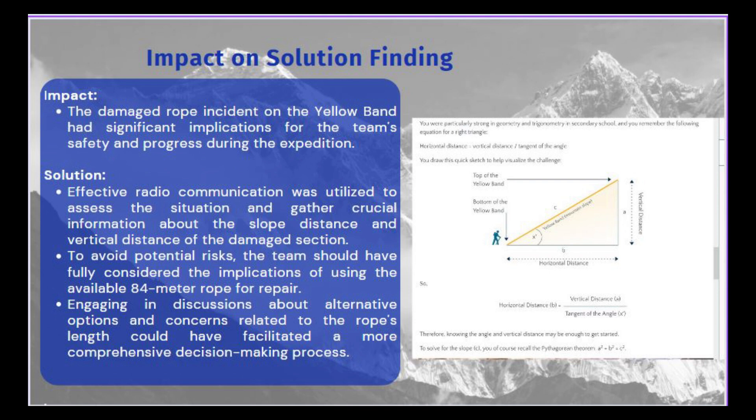The solution involved three principal approaches. Number one: effective radio communication was utilized to assess the situation and gather crucial information about the slope and vertical distance of the damaged section. Number two: the team should have fully considered the implications of using the available 84-meter rope for the repair. Number three: engaging in discussion about alternative options and concerns related to the rope length could have facilitated a more comprehensive decision-making process.